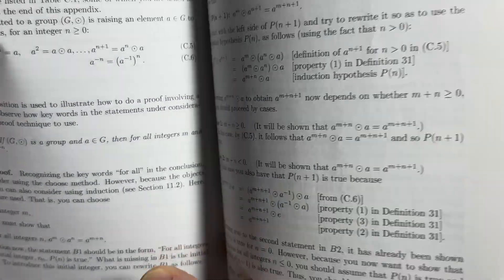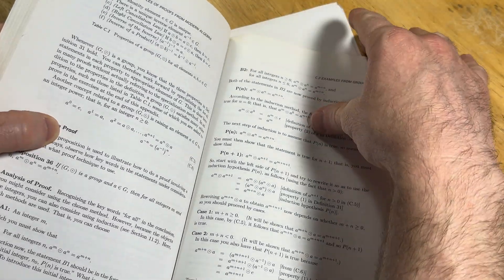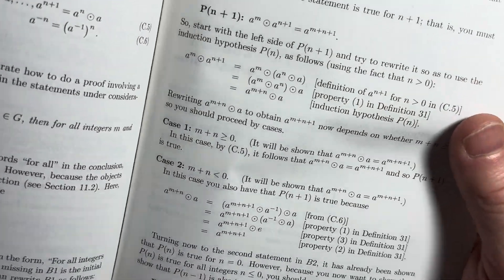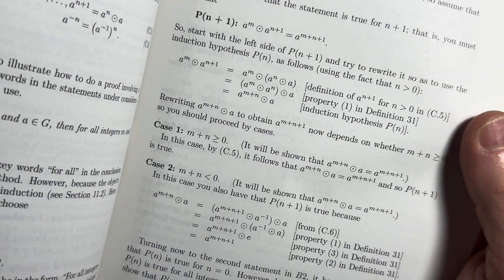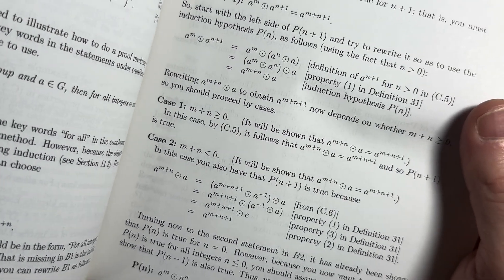So, it looks like they're going to use induction. This is a proof here by induction. And they go through. They do cases. So, it looks like they did. If M plus N is greater than or equal to zero, and then if M plus N is less than zero. So, he does two cases.